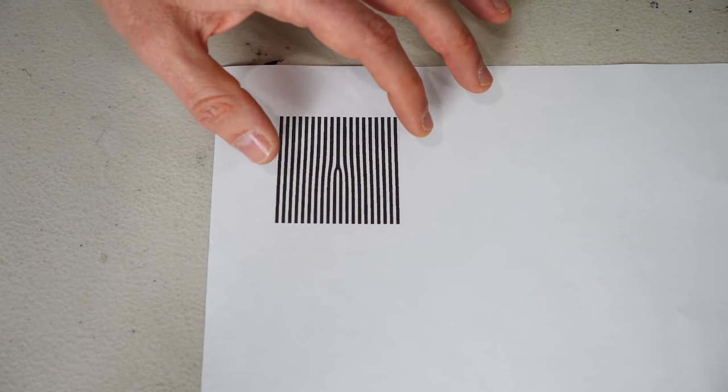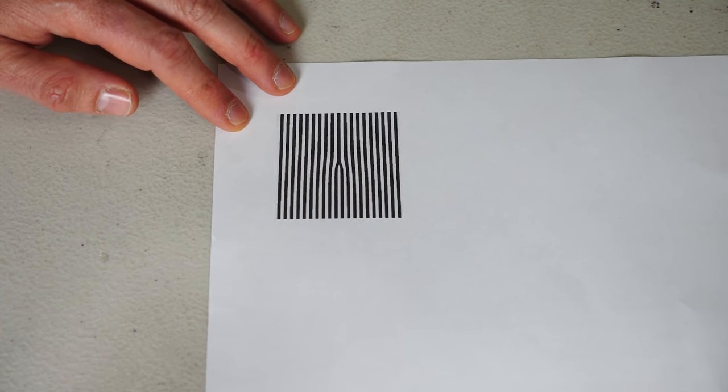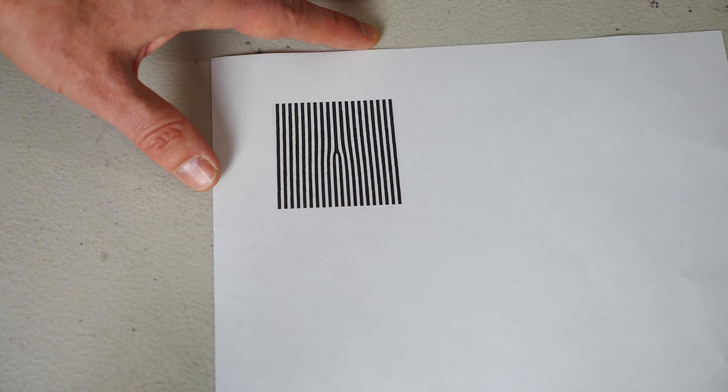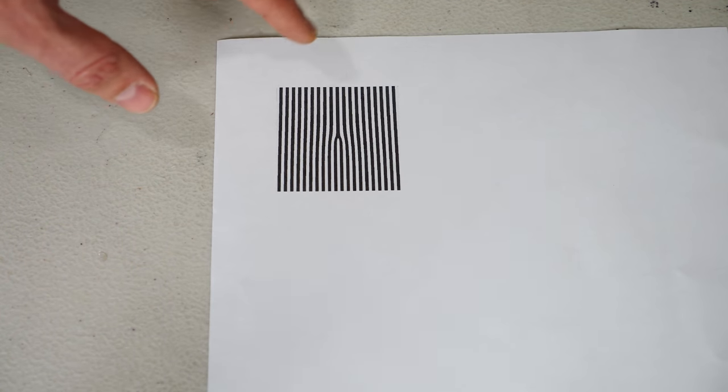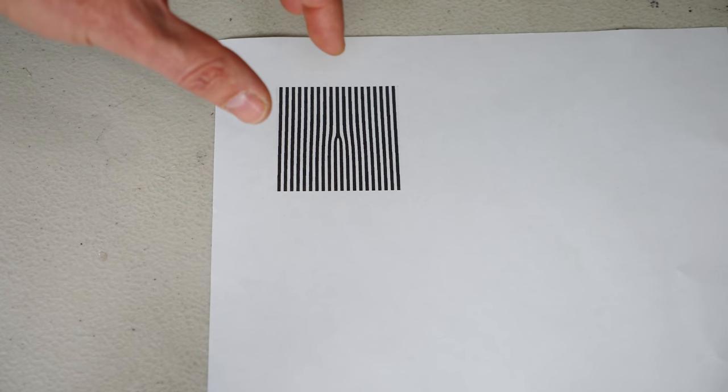Now in order for this to work we can't have the pattern be this big. We actually have to shrink it down. And the best way to shrink this down is to put it in a copy machine and then reduce the size of it. If you just try to print it out from a Word document or something, you'll be limited to the pixels when you try to make it small enough.